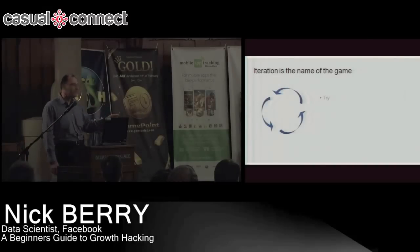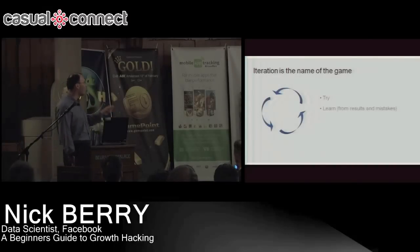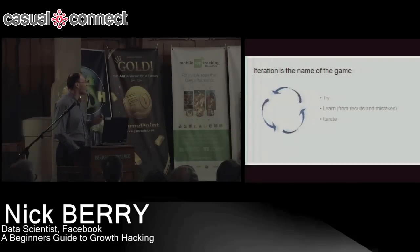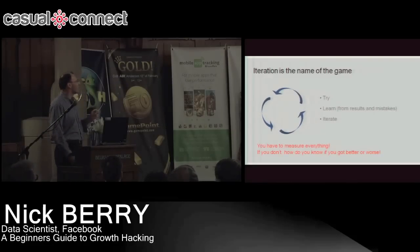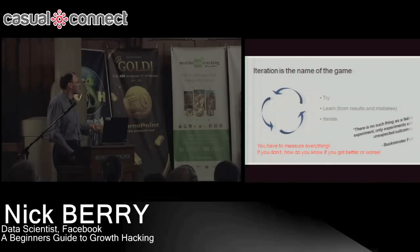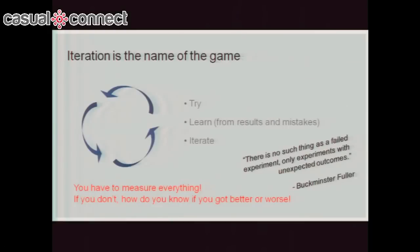Iteration is also the name of the game — it goes back to A/B testing. You try something, you learn from results and mistakes. You can learn just as much from an experiment that doesn't go right. Then you iterate. Key to all this: you have to measure everything. If you don't, how do you know whether you're getting better or worse? There's no such thing as a failed experiment — only experiments with unexpected outcomes.